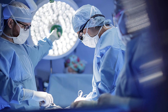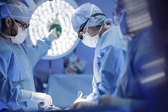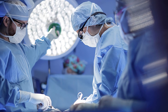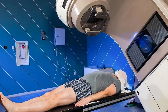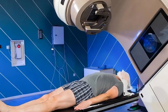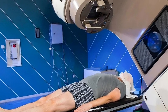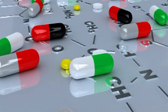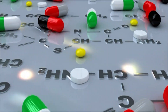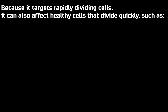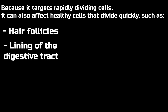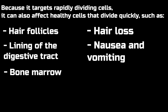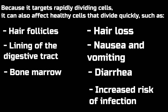Surgery involves removing the tumor and surrounding tissue, and can be a curative treatment for some types of cancer, especially if the cancer has not spread. Radiation therapy uses high-energy radiation to kill cancer cells, either through external beams or by placing radioactive material directly into or near the tumor. Chemotherapy involves the use of drugs to kill cancer cells by stopping them from reproducing. Because it targets rapidly dividing cells, it can also affect healthy cells — such as those in hair follicles, the digestive tract lining, and bone marrow — leading to side effects like hair loss, nausea, vomiting, diarrhea, and increased risk of infection.